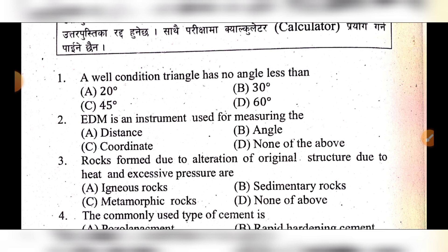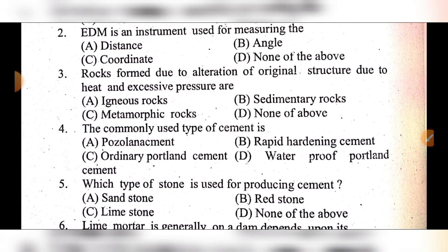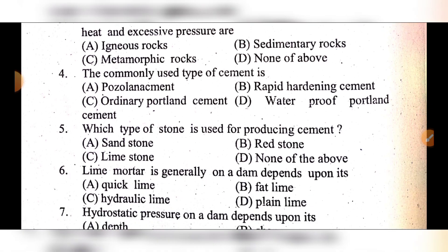Question 4: The commonly used type of cement is — option A: pozzolanic cement, option B: rapid hardening cement, option C: ordinary Portland cement, option D: waterproof Portland cement. The answer is option C: ordinary Portland cement.